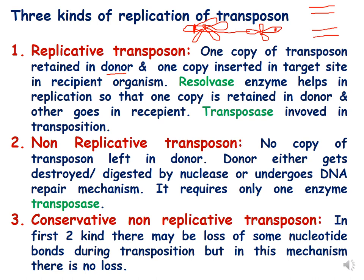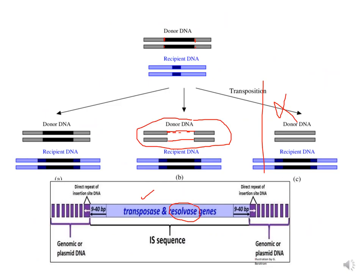In non-replicative transposition, no copy of the transposon is left in the donor; the donor either gets degraded by nucleases or undergoes DNA repair. It requires only one enzyme, transposase, because this is also called cut-and-paste transposition — no copy is made so resolvase is not needed. In the third kind, conservative non-replicative transposition, there is no loss of any nucleotides during transposition, unlike in the first two kinds.